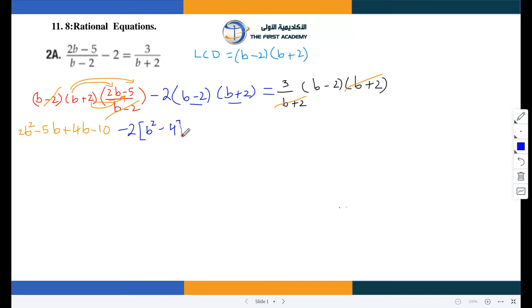So B squared minus 4 equals. Now whatever is left after cancellation we will multiply it on the other side: 3 times B is 3B, 3 times negative 2 is negative 6.